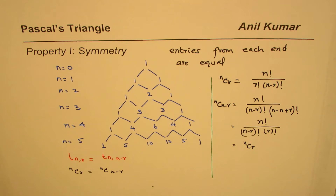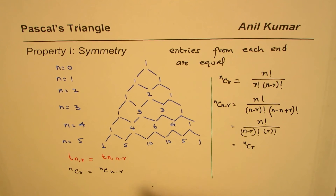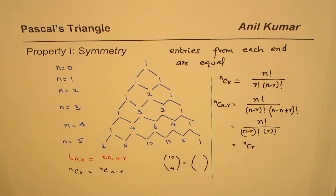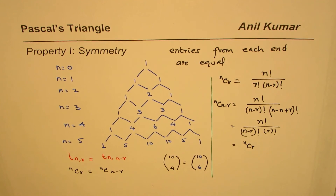The binomial coefficient nCr equals nC(n minus r). Based on this, we can answer questions — for example, 10C4 equals 10C6, since n is 10 and n minus r is 10 minus 4 equals 6. I hope the concept of symmetry is very clear, linking Pascal's triangle with the binomial coefficients. I'm Anil Kumar — I hope that helps, thank you and all the best.